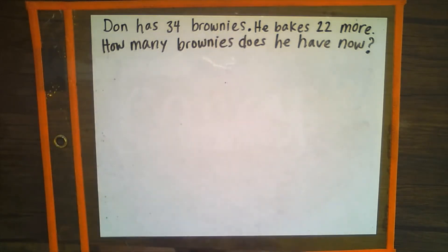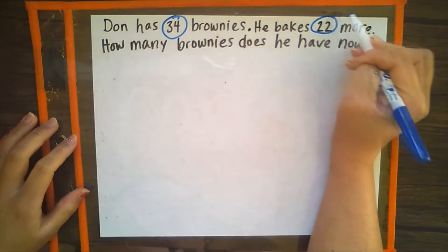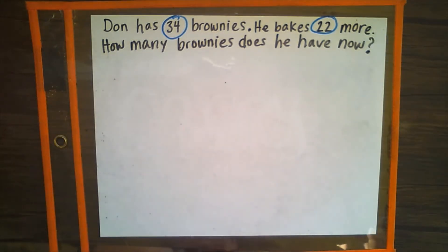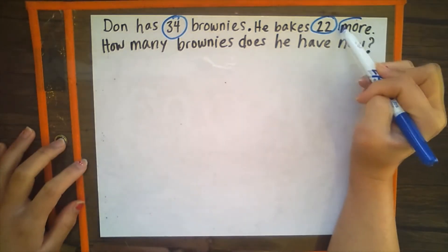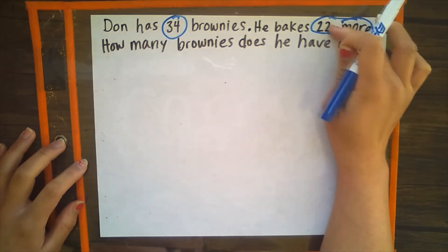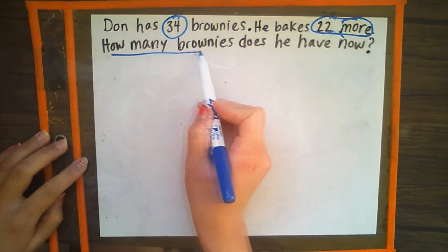Don has 34 brownies. He bakes 22 more. How many brownies does he have now? Don has 34 brownies — I see something I need to circle, which is our number 34. He bakes 22 more. I need to circle 22, and don't neglect the word 'more' here. That tells me I'm probably going to need that word later on, so I'm going to circle that as well, because it's part of my number 22. How many brownies does he have now? That's our question.